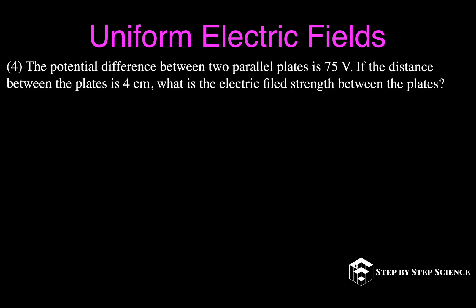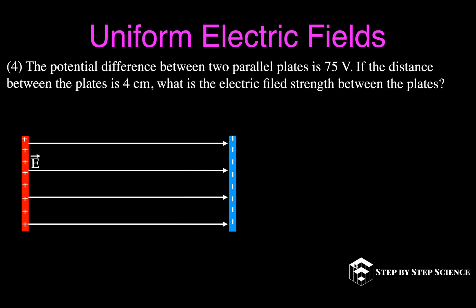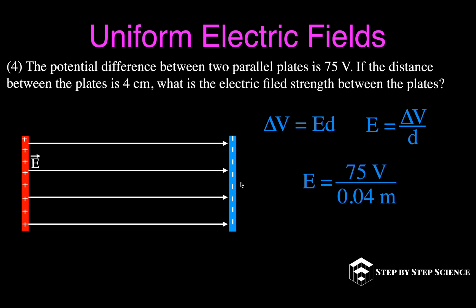Example four uses the other equation. There's a potential difference of 75 volts between two parallel plates separated by 4 centimeters. We want the electric field strength. Using E equals delta V divided by d, and converting 4 centimeters to 0.04 meters, we get 75 divided by 0.04, giving an electric field strength of 1,875 volts per meter.